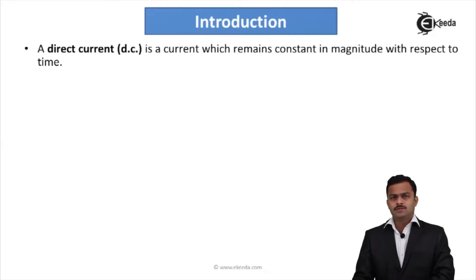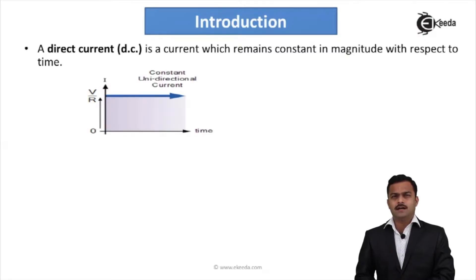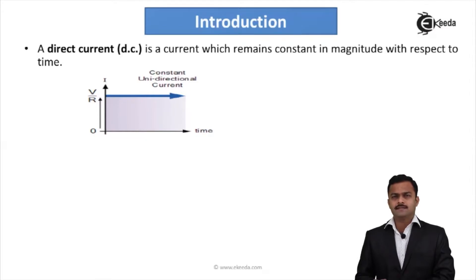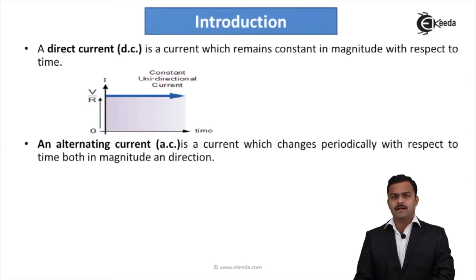Direct current is a current which remains constant in magnitude with respect to time. If I plot the graph, I will get a straight line which is independent of time — a fixed magnitude.